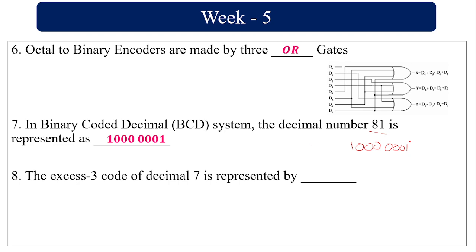XS3 code of decimal 7: XS3 means you have to add 3 to the decimal value. So 7 plus 3 equals 10. The binary value of 10 is 1010. So the XS3 value of 7 is 1010.